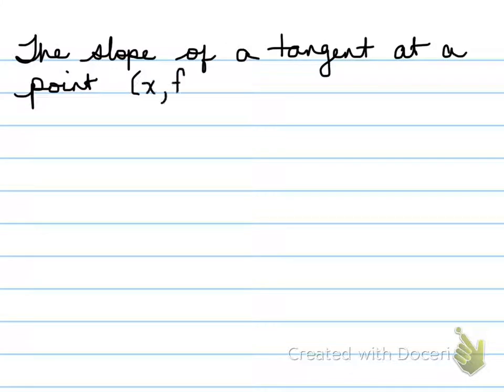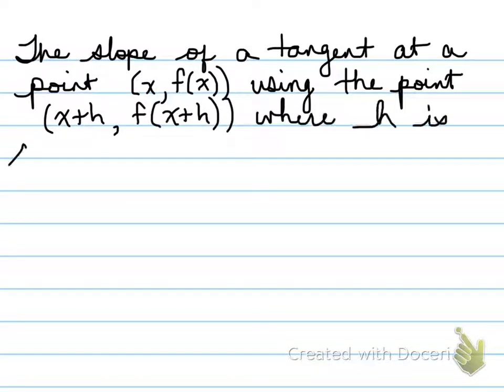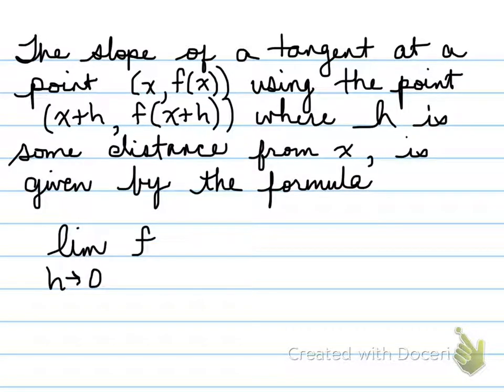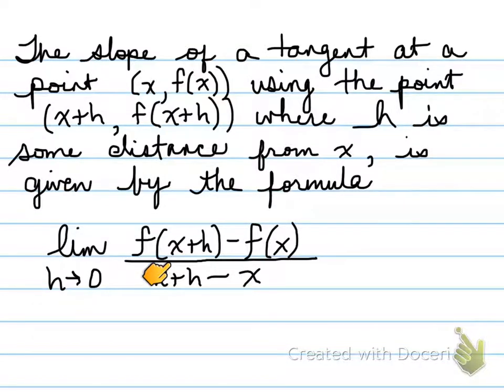All right, next one. The slope of a tangent at a point x, f(x) using the point x plus h, f(x plus h) where h is some distance from x is given by the formula the limit. Now, notice what we're talking about here. Normally, when we find the slope we have x and we have a number pretty close to x so that it's pretty much the point of tangency. Now, the thing is, as this h gets smaller and smaller, so close to 0, h is getting closer and closer to 0, we can find the slope of these points by writing f(x plus h) minus f(x) over x plus h minus x. So this is the limit.